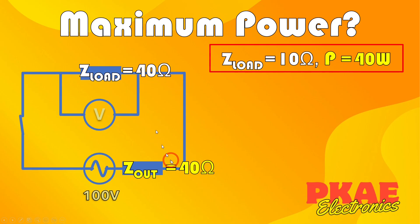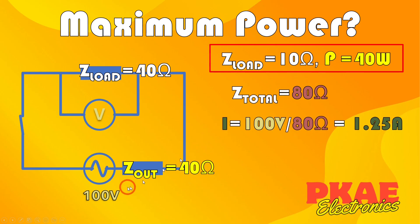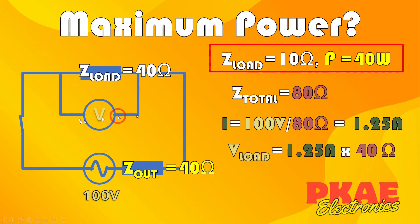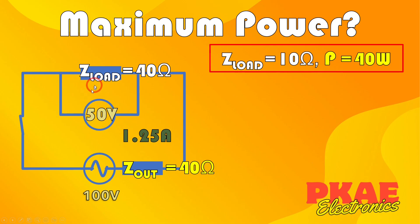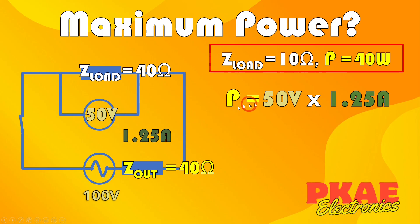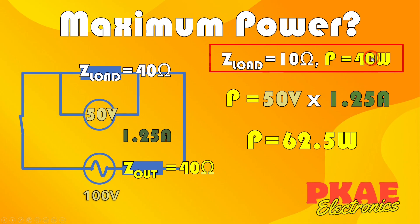Now let's match the load impedance with the output impedance and see what we get. We now have a total impedance of 80 ohms — 40 plus 40. That means our current is 100 volts divided by 80 ohms, giving us 1.25 amps. The voltage across the load, which is 40 ohms at 1.25 amps, is now 50 volts. So the power is 50 volts times 1.25 amps, giving us 62.5 watts — that's 22.5 watts more than when we had just 10 ohms of load impedance.